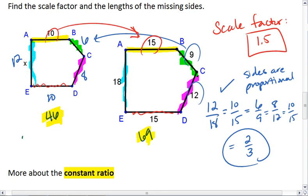We see that 46 to 69 is, in fact, going to be a 2 thirds ratio. It's that same constant ratio.